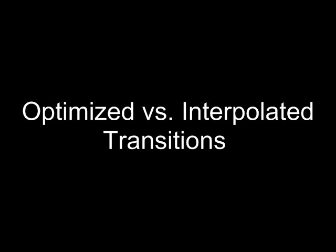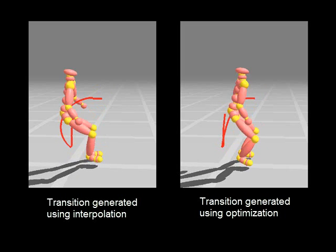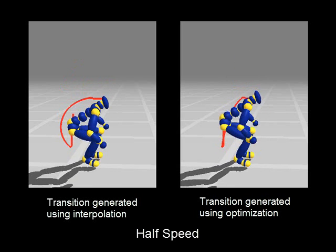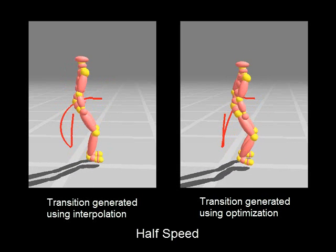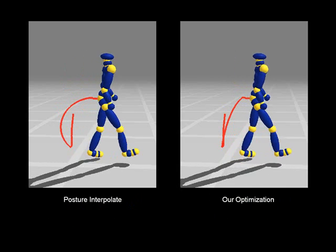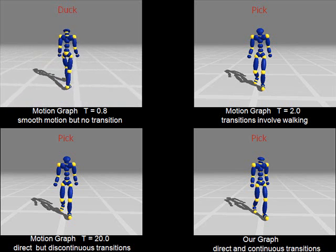This example compares transitions generated using continuous optimization and simple interpolation. Optimization consistently produces more natural and physically correct transitions. Although motion graphs create extra transitions, these transitions are limited to those between similar postures.